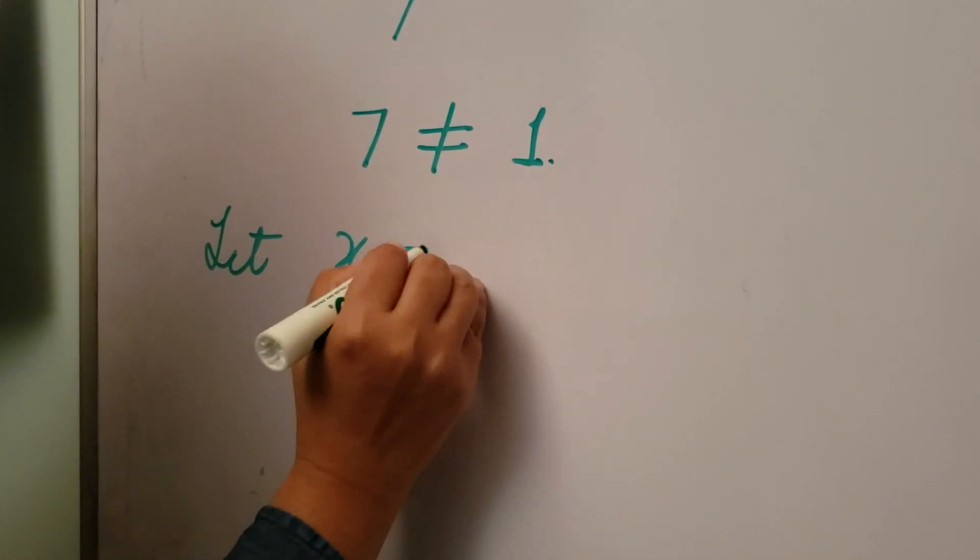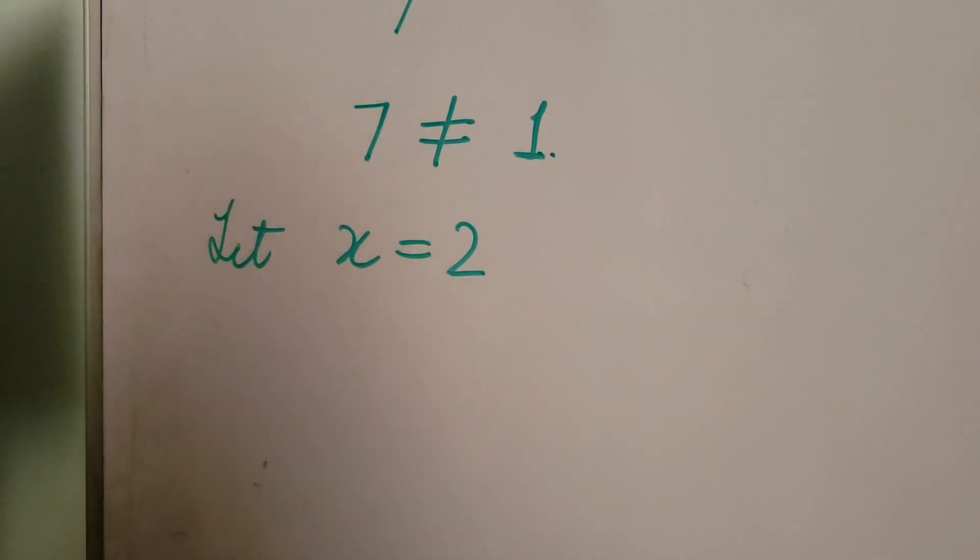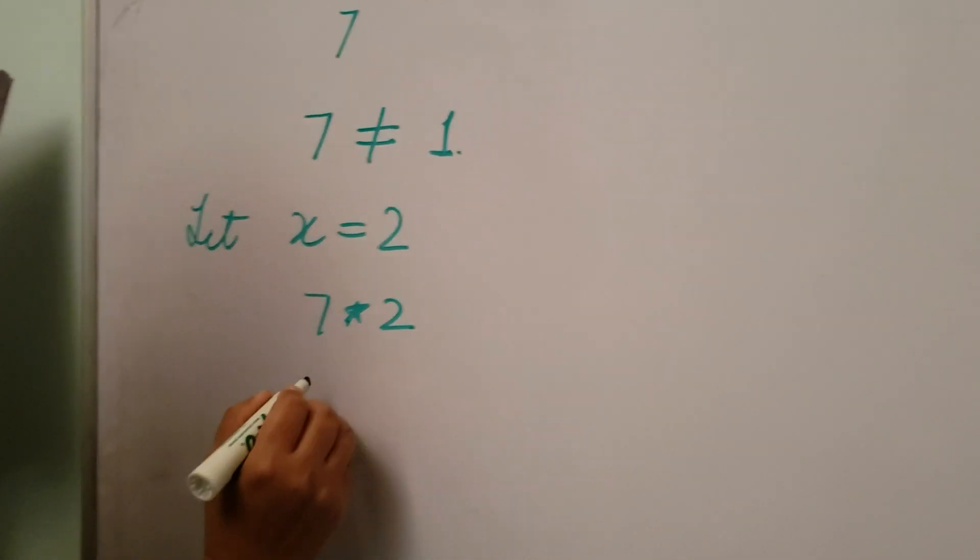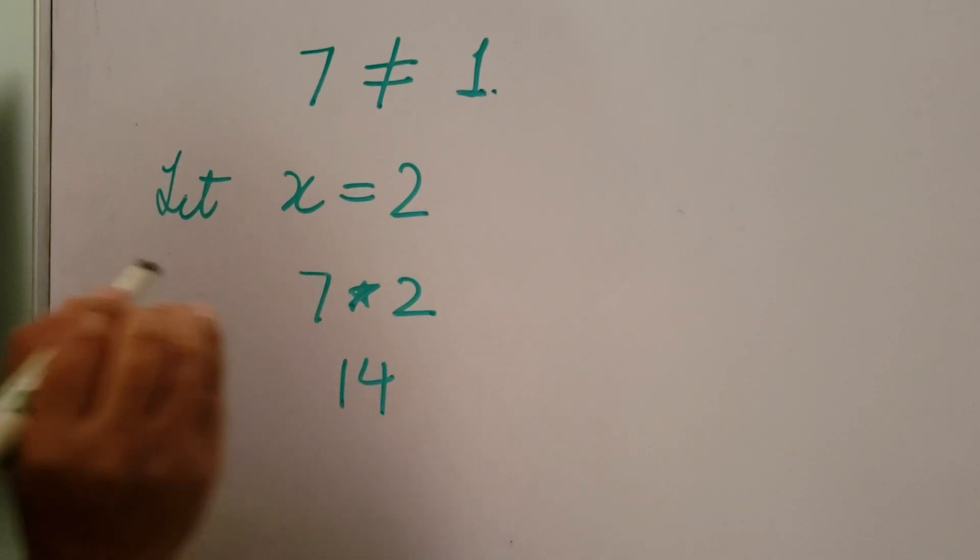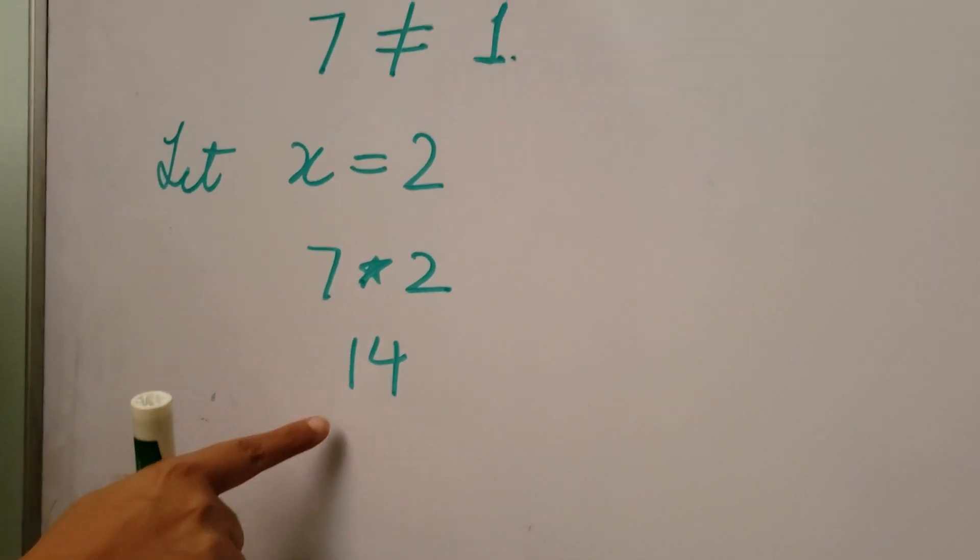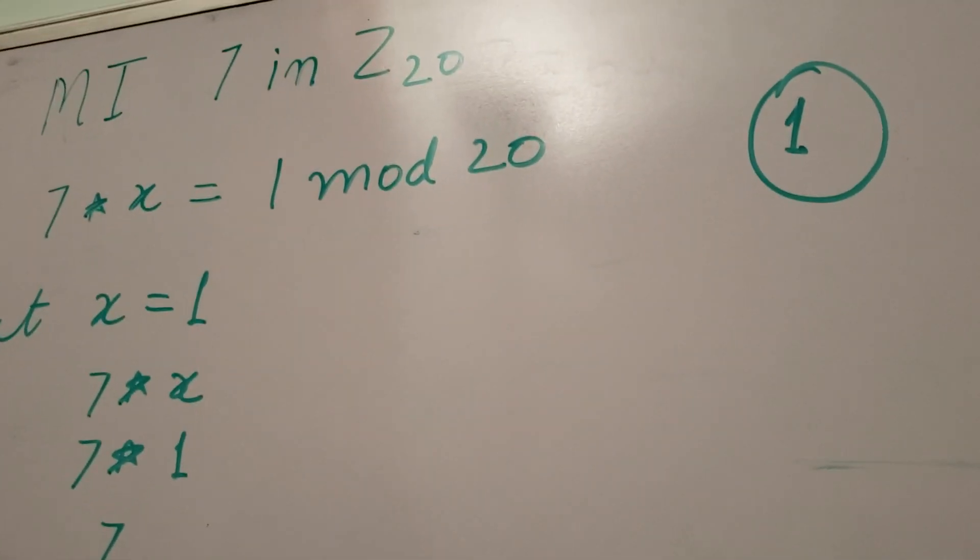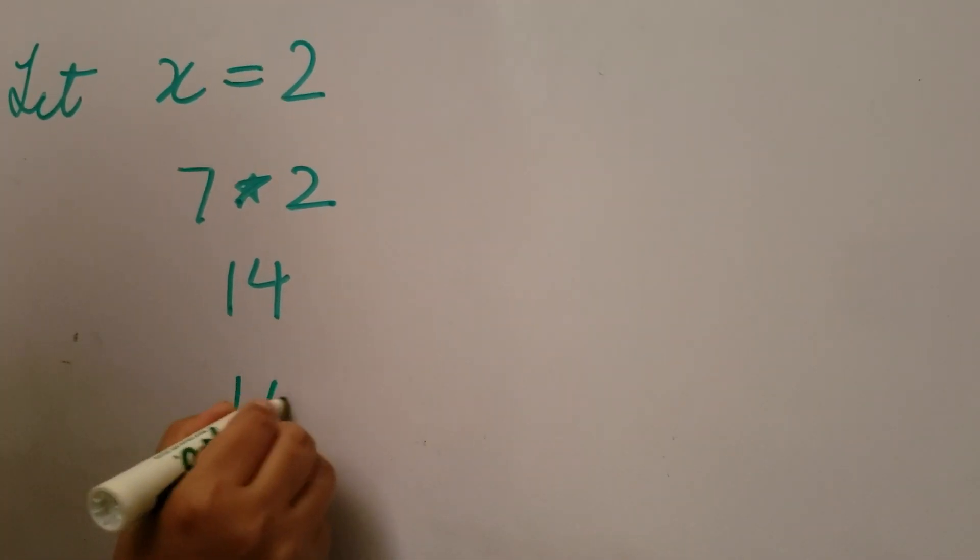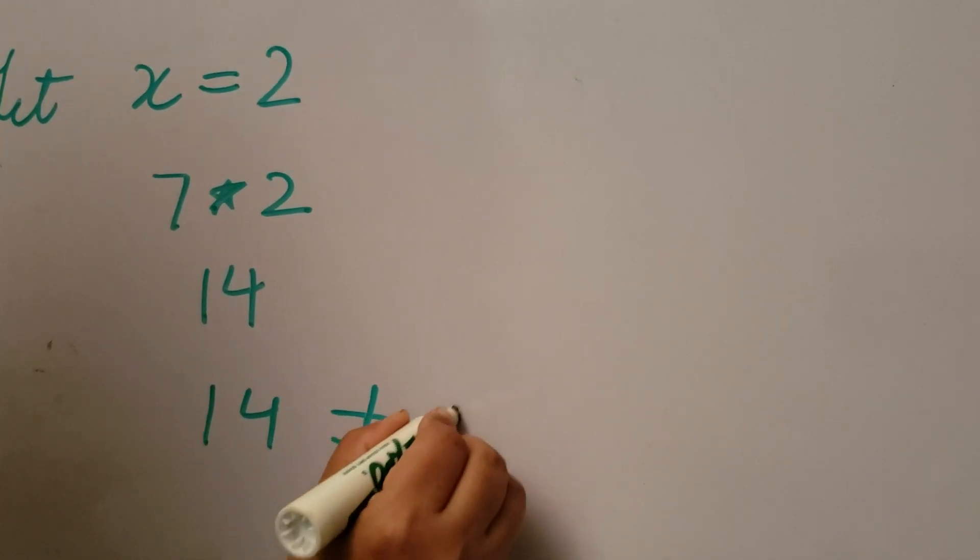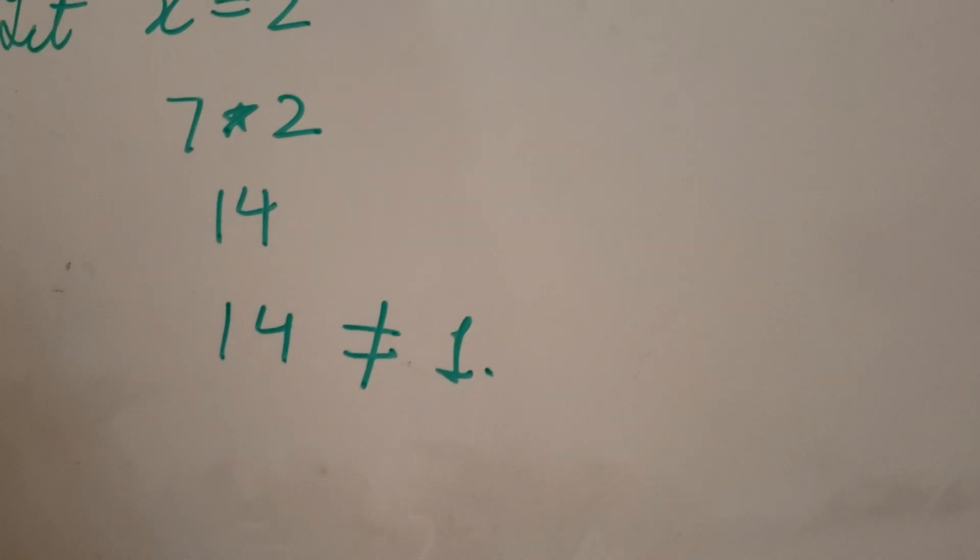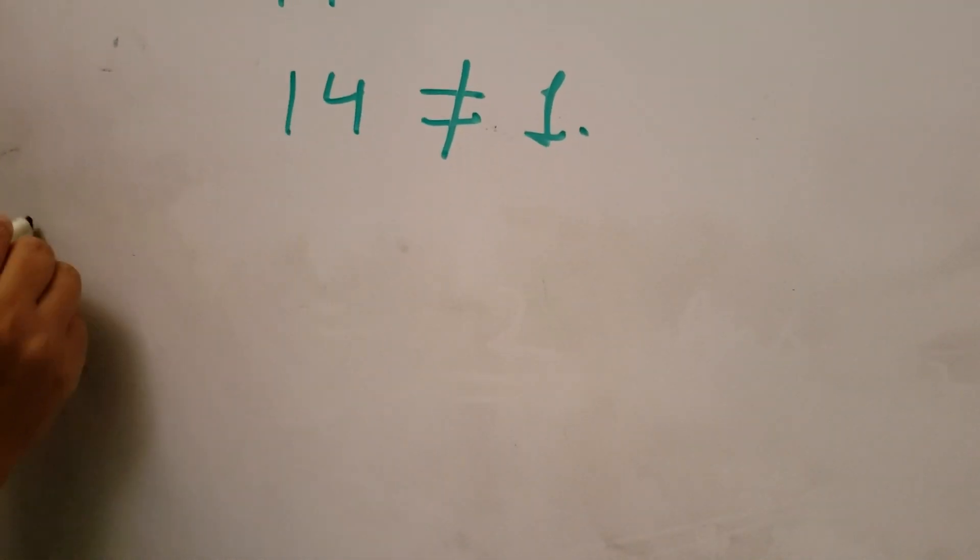x is equal to 2. 7 times 2 is 14. So again, 14 is less than 20, so we stop here and there is no need to take mod with 20. And 14 is not equal to 1, and we are looking for 1 on the right hand side. Let's move on.